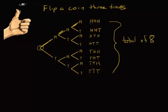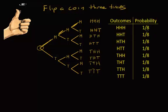All the probabilities in this distribution are one-eighth, because each one of these outcomes is equally likely to happen and there are eight possibilities. This exhausts all possibilities — none are missing — and if you add up all eight one-eighths, it adds up to one. So this is a true probability distribution.